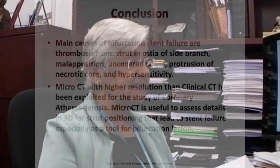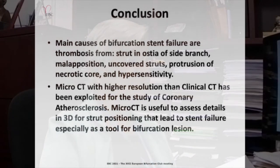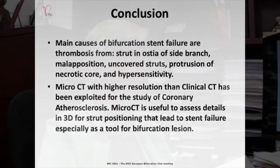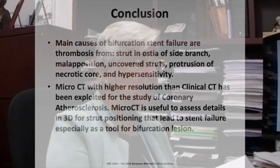In conclusion, the main causes of bifurcation stenting failure are thrombosis from struts at the ostial side branch, malapposition, uncovered strut protrusion, necrotic core, and hypersensitivity. Micro-CT with higher resolution than clinical CT has been explored for studying coronary atherosclerosis, and is useful to assess three-dimensional details of strut positioning that lead to stent failure — especially as a tool for bifurcation lesions. Thank you.